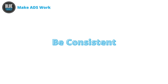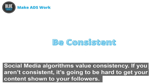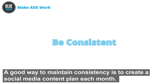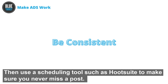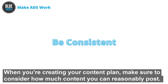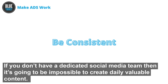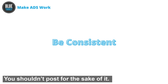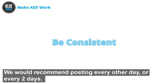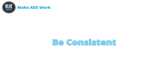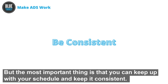Be consistent. Social media algorithms value consistency. If you aren't consistent, it's going to be hard to get your content shown to followers. A good way to maintain consistency is to create a social media content plan each month and then use a scheduling tool such as Hootsuite to make sure you never miss a post. When creating your content plan, consider how much content you can reasonably post. If you don't have a dedicated social media team, it's going to be impossible to create daily valuable content. We would recommend posting every other day or every two days, but the most important thing is that you keep your schedule consistent.